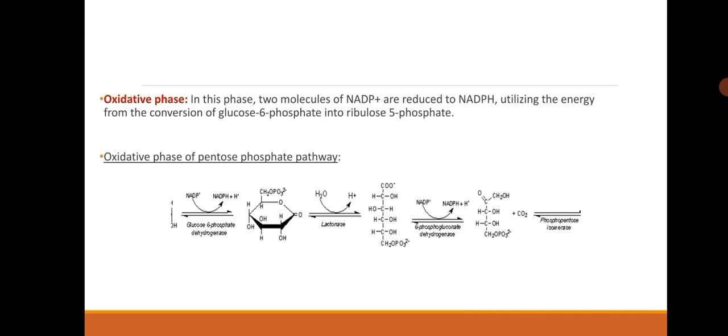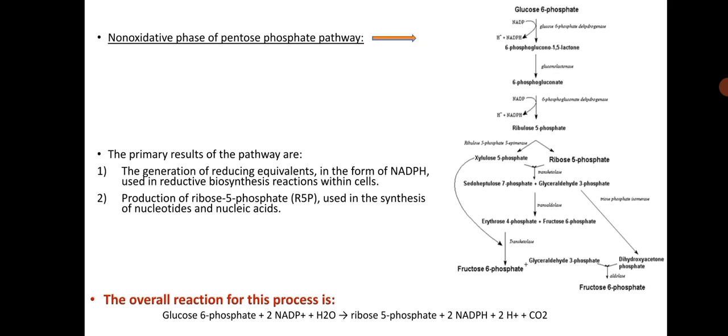Oxidative phase. In this phase, two molecules of NADP plus are reduced to NADPH utilizing the energy from the conversion of glucose 6-phosphate into ribulose 5-phosphate. The primary results of the pathway are the generation of reducing equivalents in the form of NADPH used in reductive biosynthesis reactions within cells, and production of ribose 5-phosphate used in the synthesis of nucleotides and nucleic acids. The overall reaction for this process is glucose 6-phosphate plus 2 NADP plus H2O gives ribose 5-phosphate plus 2 NADPH plus 2 H plus plus carbon dioxide.